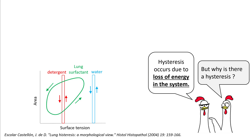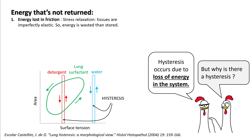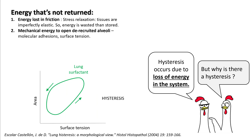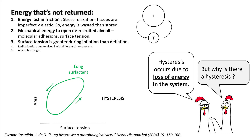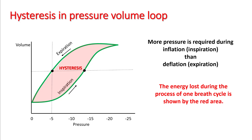Hysteresis occurs mostly from loss of energy in the system. It is noticed in most elastic bodies because these are imperfectly elastic. The loop of water and detergent encloses a small area — a hysteresis loop. In lungs, additional mechanisms are at play: mechanical energy is required to open de-recruited alveoli, energy is required to break molecular adhesions, and surface tension is greater during inflation than deflation.